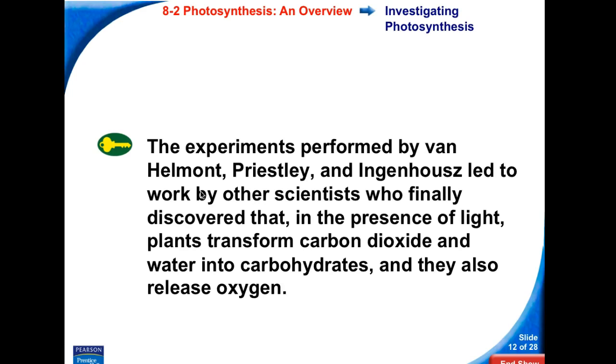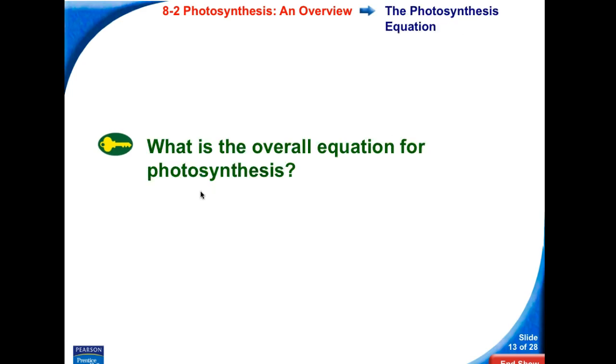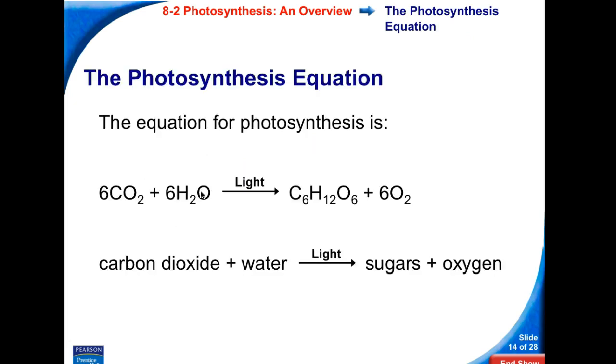Key concept: The experiments performed by Van Helmont, Priestley, and Ingenhousz led to work by other scientists, who finally discovered that, in the presence of light, plants transform carbon dioxide, CO2, and water, H2O, into carbohydrates, and they also released oxygen gas, O2. For our purpose, carbohydrate will represent glucose, molecular formula C6H12O6. So we see this in the overall equation for photosynthesis.